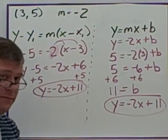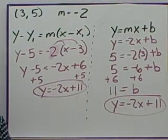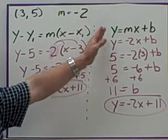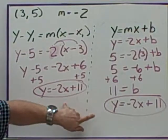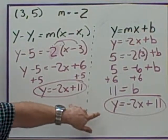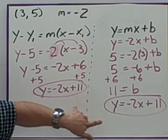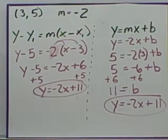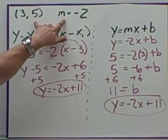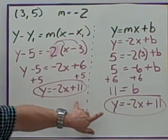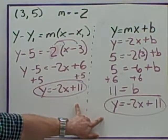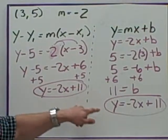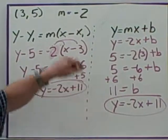Both methods give the same answer. Some of you may find one method easier than the other, but if you are asked for slope-intercept form, it has to end in that form. You may be given a multiple choice question where all the answers are in slope-intercept form, so even if not told explicitly, you need to recognize and use that form.